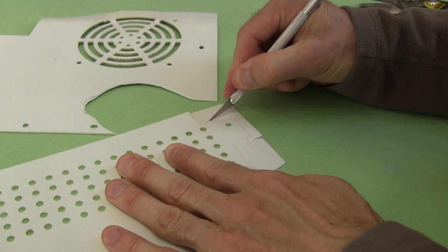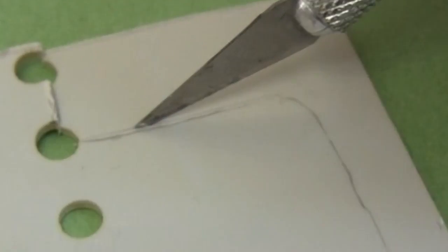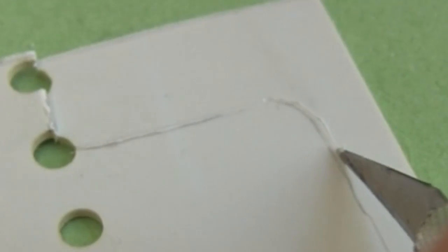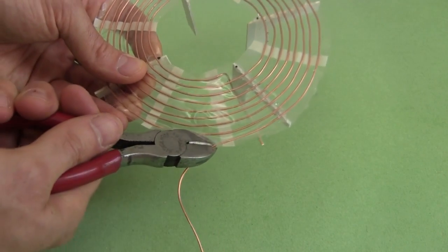Then I cut 4 pieces of scrap plastic. Notice that since I used a pencil to draw the outlines on the plastic, and the graphite from the pencil is electrically conductive, I make sure to cut within the lines, so that I don't have any graphite on my pieces. I then hot glue them under the spiral coil. I also trim off this excess wire.